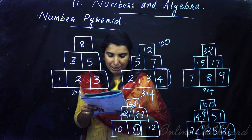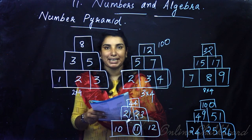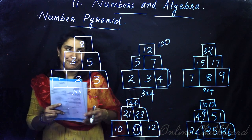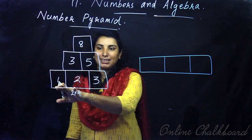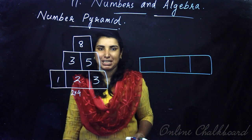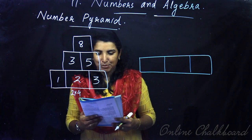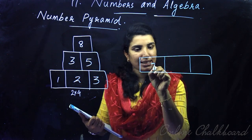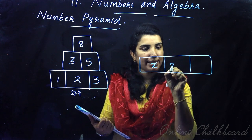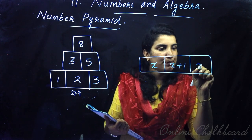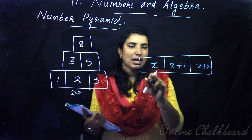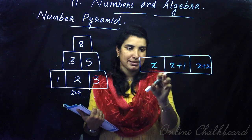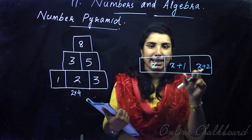If we use the algebraic formula, we can do the algebraic formula. Let's take a look at the consecutive natural numbers. Let's take a look at the textbook. The consecutive natural numbers are x, x plus 1, x plus 2. So this is 3 consecutive natural numbers: x, x plus 1, x plus 2.